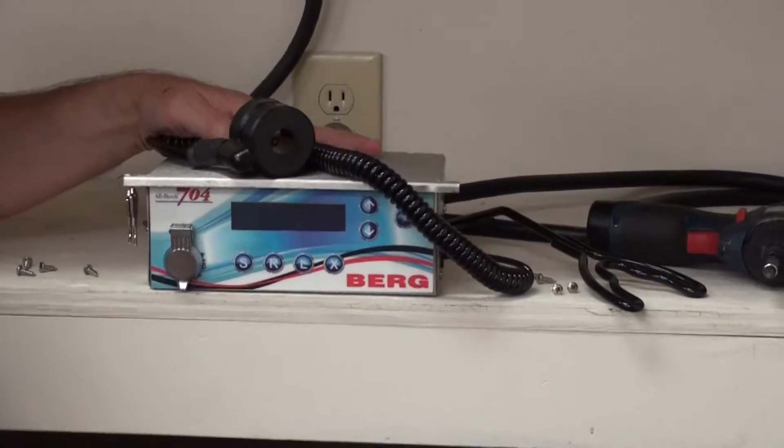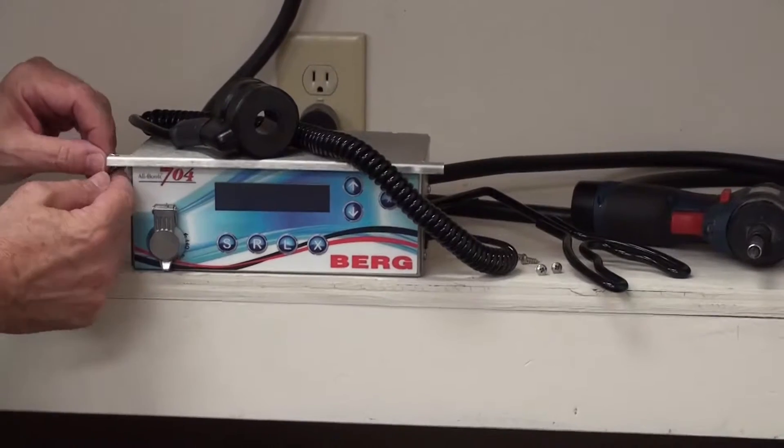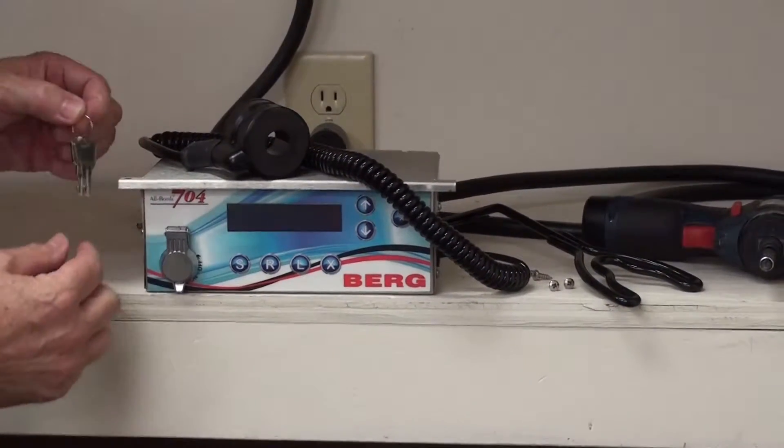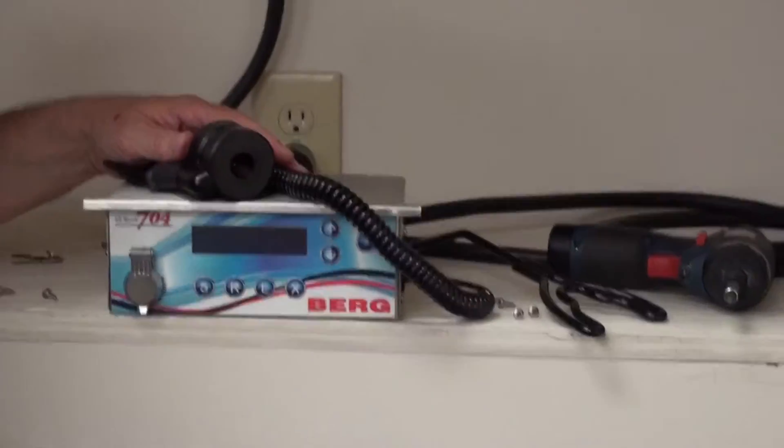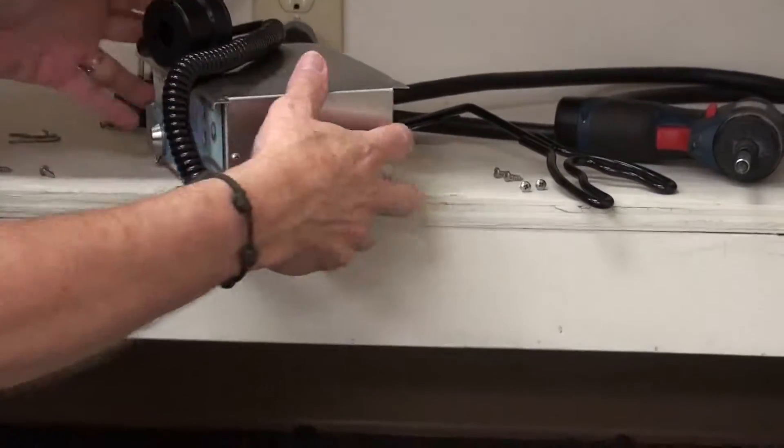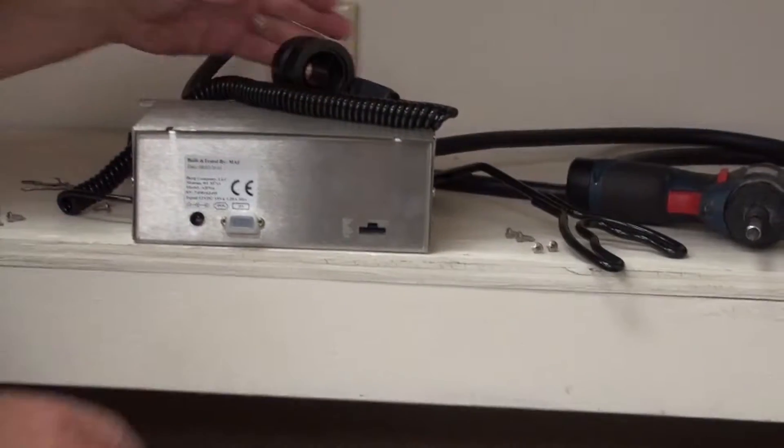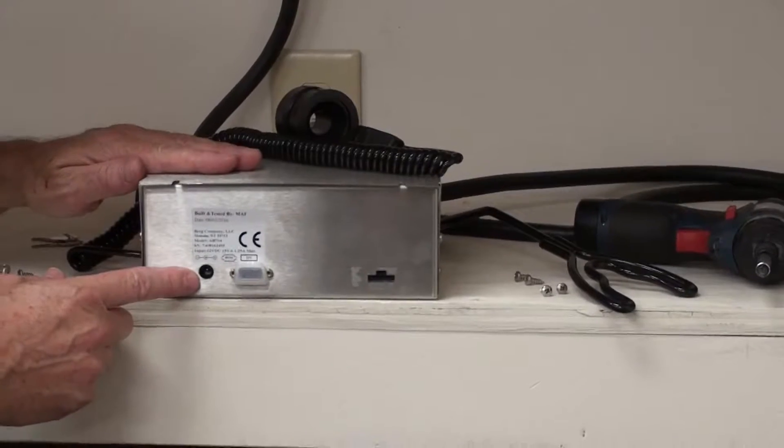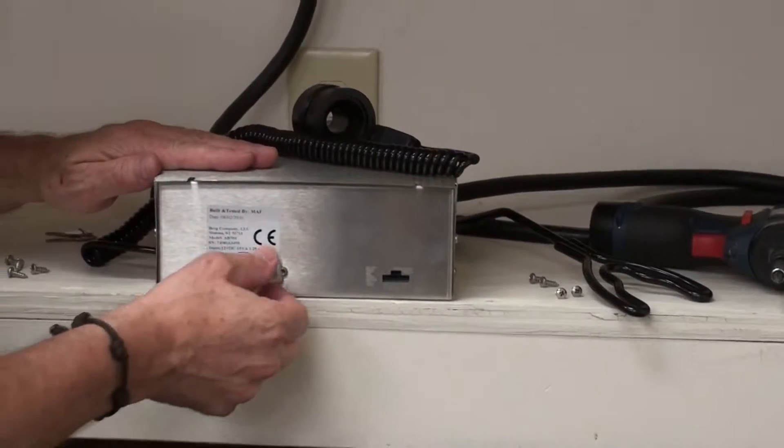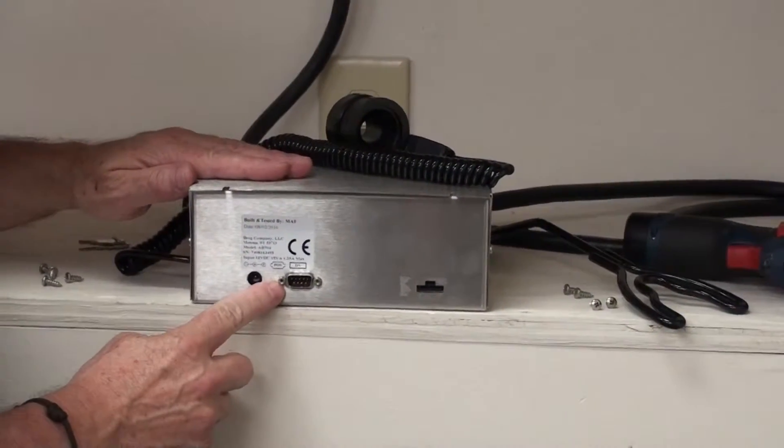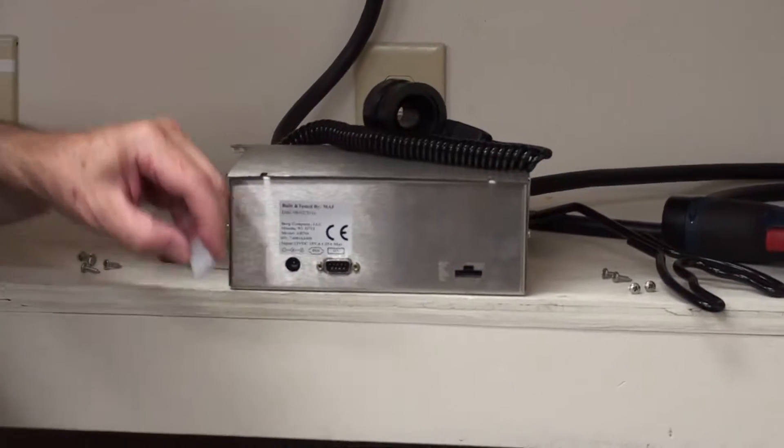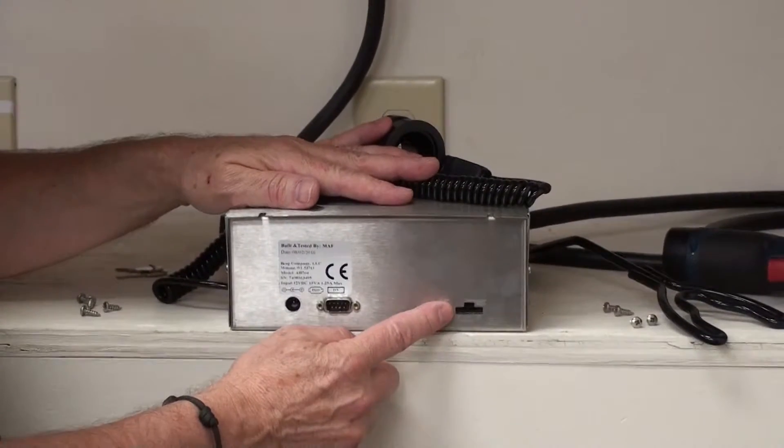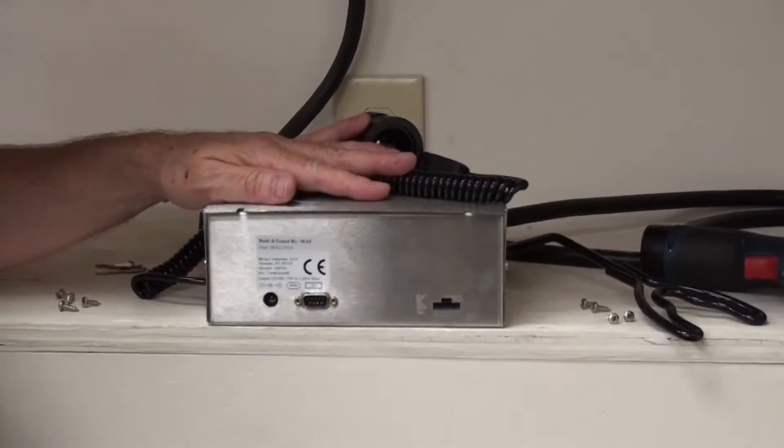First we're going to have Ron remove the keys from the dispenser. Ron, could you turn around the unit so we can show everyone the ports on the back? The first port you're looking at is your power port. The second port on the back is your POS interface port or your serial printer interface. And the third port on the back is your dispenser network communication port.